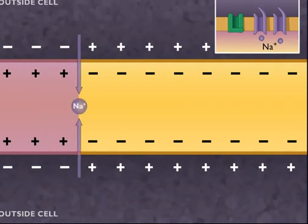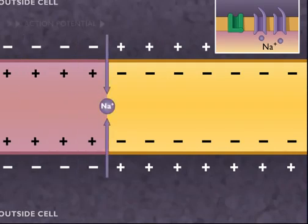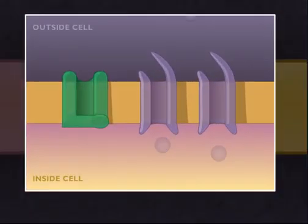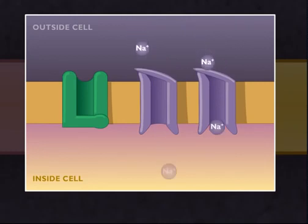Changes occur behind the action potential to restore the resting membrane potential. The voltage-gated sodium channels close and voltage-gated potassium channels open. This allows a rapid flow of potassium ions out of the cell, repolarizing the membrane so that the inside is again negative and the outside positive.